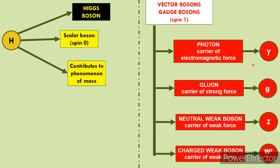Kisi na kisi type ke force ko yeh carry karte hain, ya kisi na kisi type ke force ke base particle maane jaate hain. Jaise photon ke example se samjhaya hai — light ka carrier photon hai, aur light ek electromagnetic wave hai, so electromagnetic force ka carrier photon hai. Yeh hain do categories: scalar boson aur vector boson ya gauge boson.